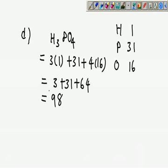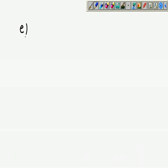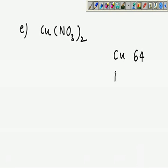Now the last one of question 3 would be E, Cu(NO3)2. Now Cu is given as 64, nitrogen is given as 14, oxygen is given as 16. You have to pay special attention to this because it has brackets.